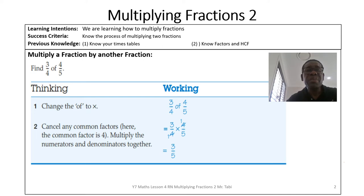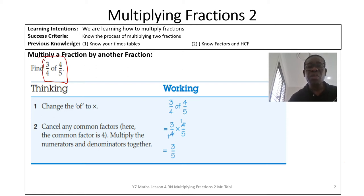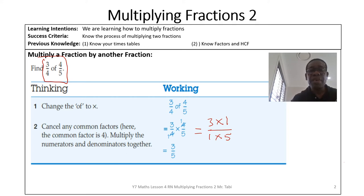Let's take a simple example, remembering our times tables and using the highest common factor to simplify. If we have 3/4 of 4/5, the 'of' simply means multiply, so we have 3/4 multiplied by 4/5. At this stage, the four in the numerator divides the four in the denominator giving one each. So we have three times one for the numerator and one times five for the denominator, giving us 3/5.